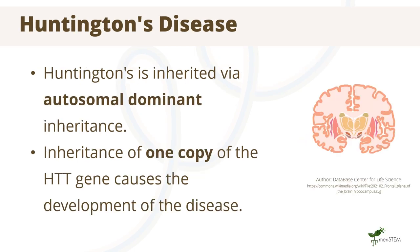An example of an autosomal dominant condition is a brain disorder called Huntington's disease, which causes progressive degeneration of nerves within the brain. For the development of this condition, the offspring requires the inheritance of a single copy of the HTT gene.